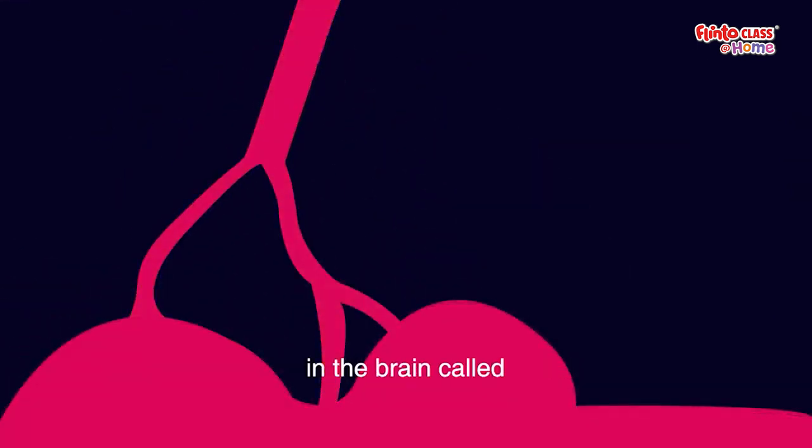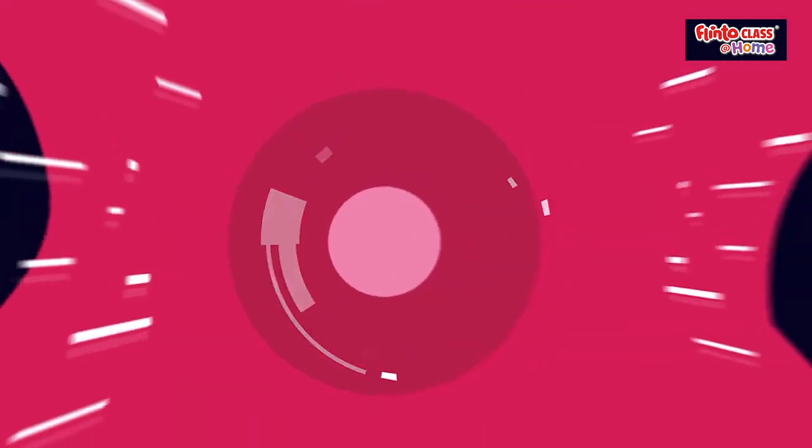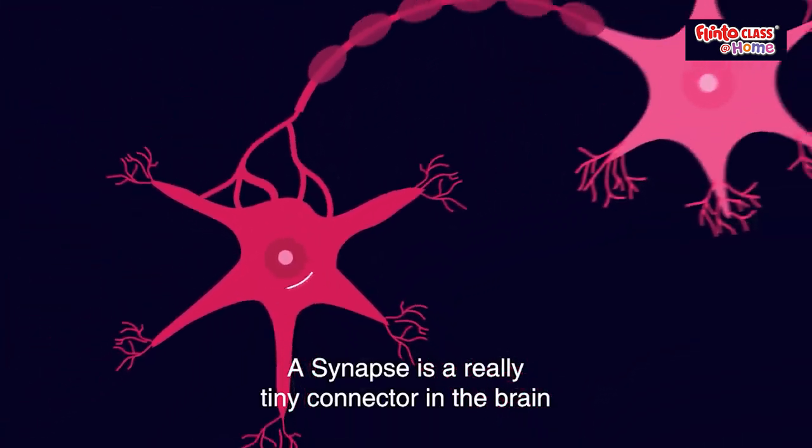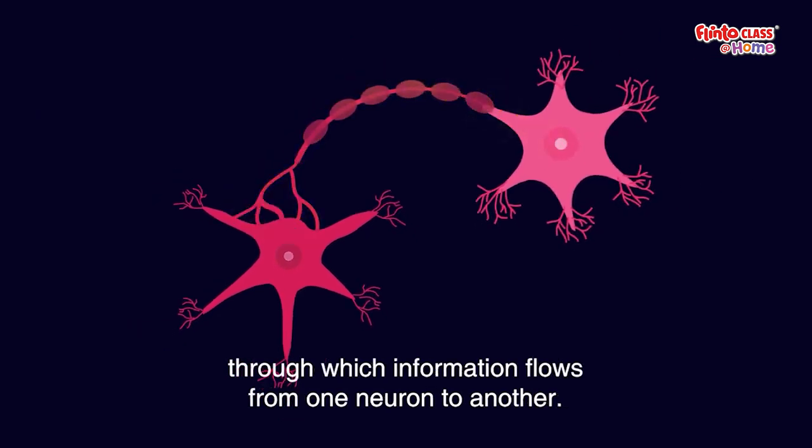Do you know there's a crucial element in the brain called the synapse? A synapse is a really tiny connector in the brain through which information flows from one neuron to another.